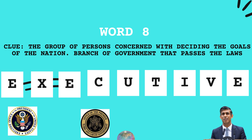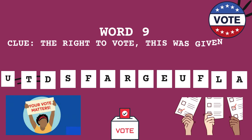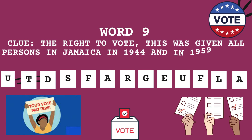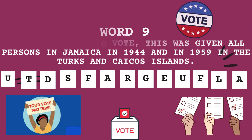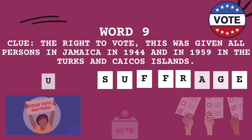All right, this one you may have to pause for a long time — I know this one is going to be a little difficult. It literally means the right to vote. It was given to all persons in Jamaica in the year 1944, and in Turks and Caicos it happened in 1959. I see some of you going online trying to figure it out. This one is called adult suffrage — yes, I know it sounds difficult, but it literally means the right to vote. Universal adult suffrage.